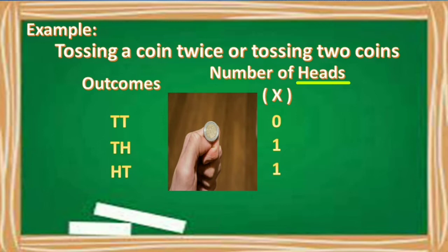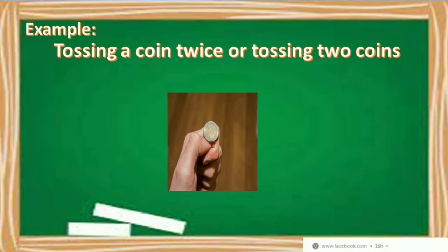At kung ang outcome natin ay head, head. Or sa unang toss ng coin, head yung lumabas. Then sa pangalawang coin, head pa rin yung lumabas. So anong magiging value natin dito? Two. Bakit two? Kasi nga, dalawang heads yung magiging outcome natin.